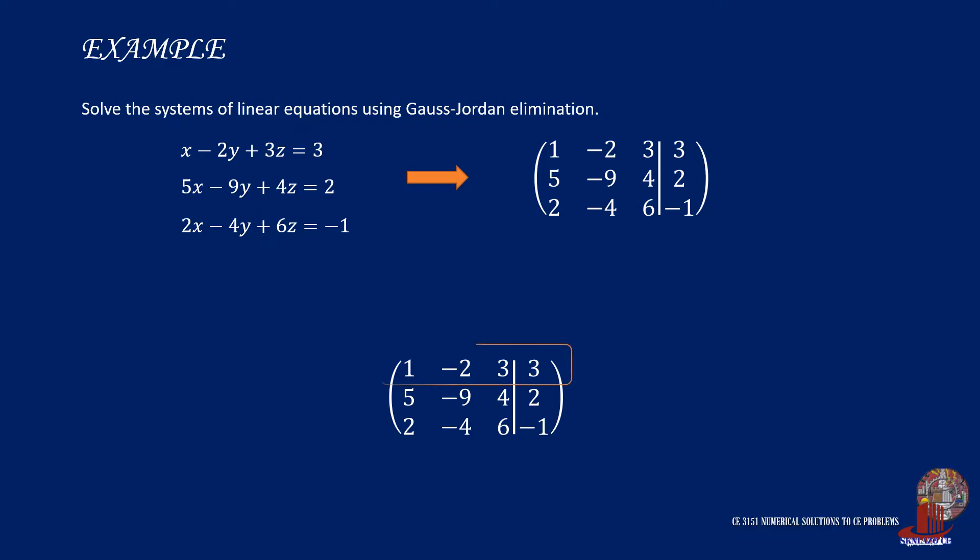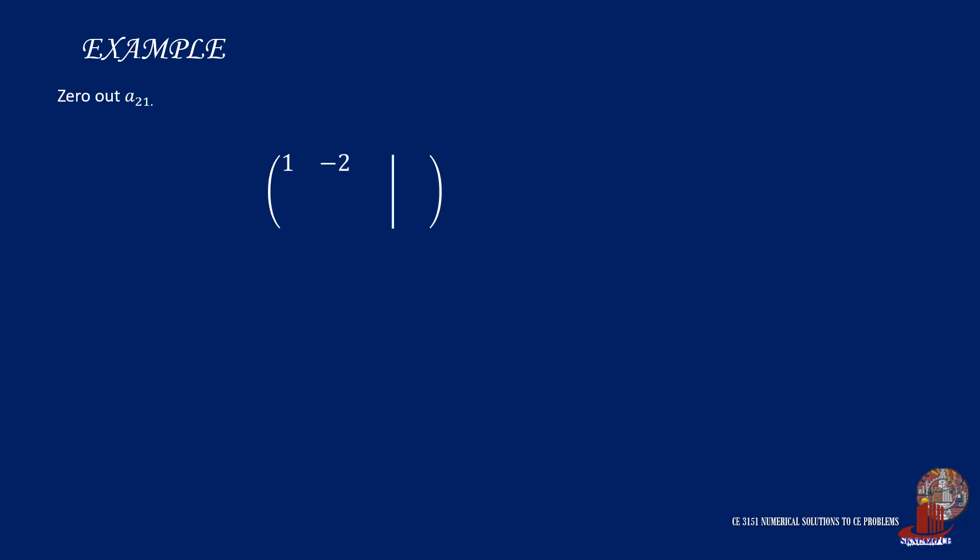We take the first row as the pivot row and element 1,1 as the pivot element. After identifying the pivot element of column 1, we can now eliminate the other elements on that column starting with element 2,1.